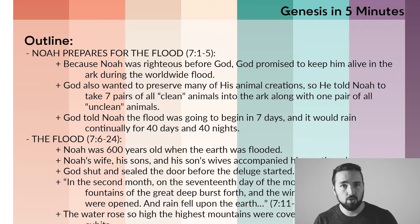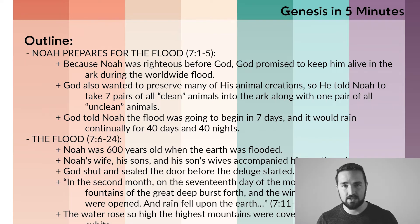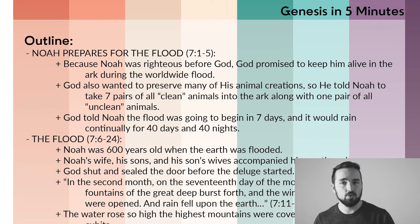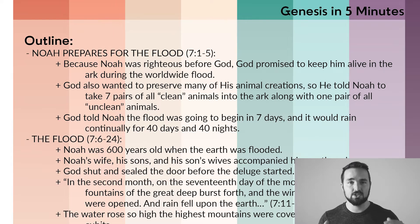Then God told Noah that the flood was about to happen — it was seven days away — and that it was going to rain for 40 days and 40 nights straight.